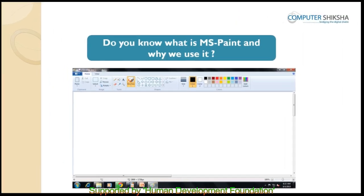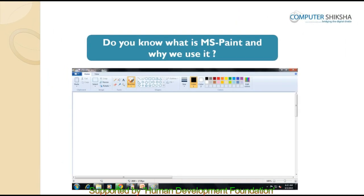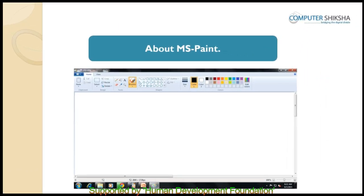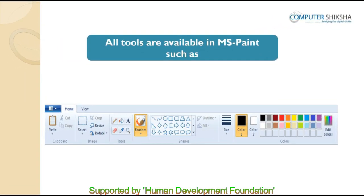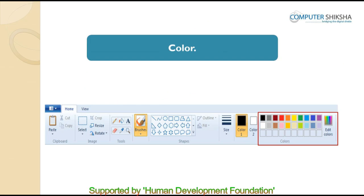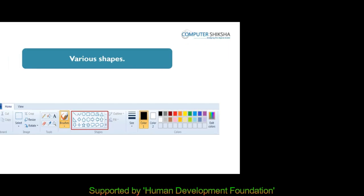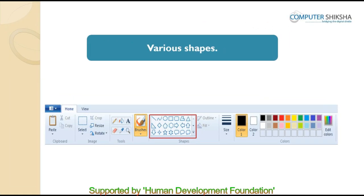Do you know what is MS Paint and why do we use it? MS Paint is a software which is used for creating drawings. Within MS Paint are available all the drawing tools that you may need, like color, pencil, eraser, various shapes, etc.